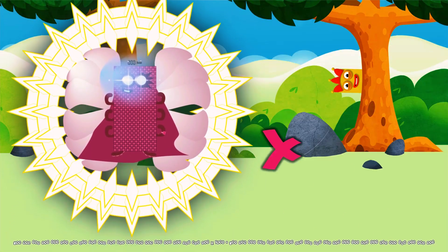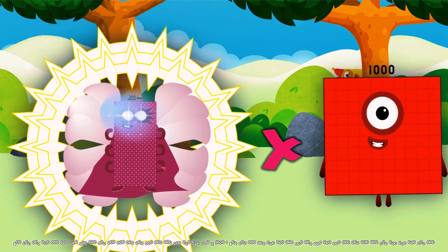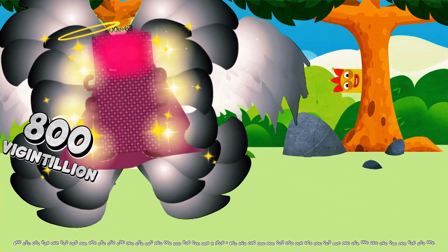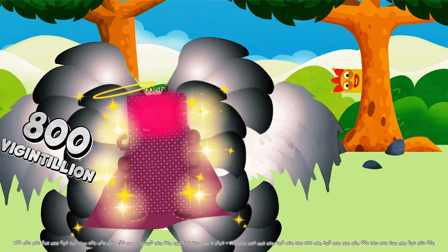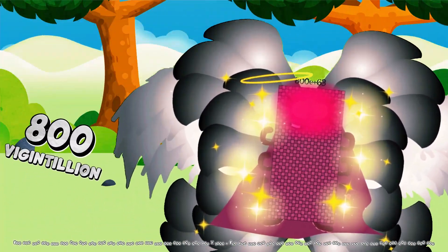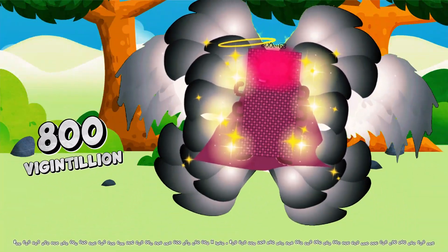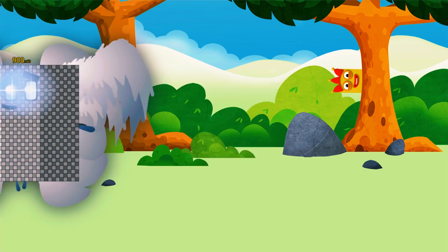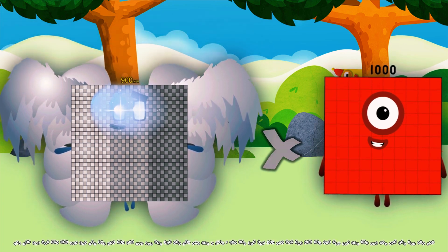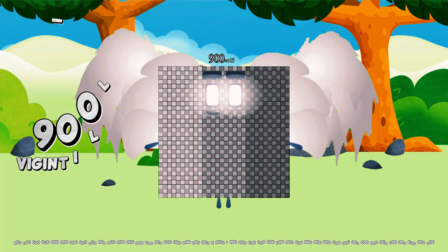800 noven decillion multiplied by 1,000 equals 800 vigintillion. 900 noven decillion multiplied by 1,000 equals 900 vigintillion.